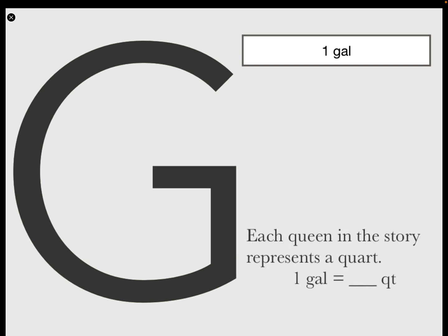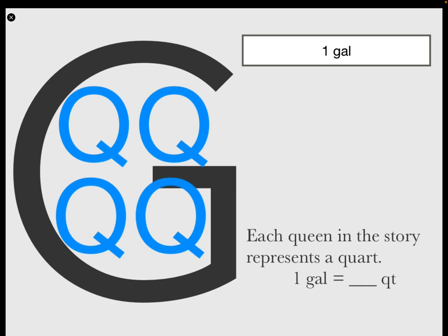Each queen in the story represents a quart. One gallon equals... Do you remember how many quarts? Four quarts equaled a gallon.